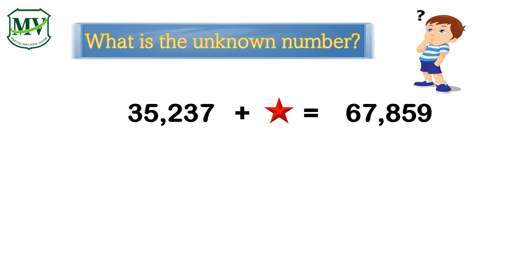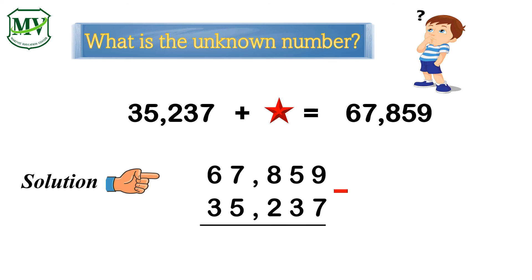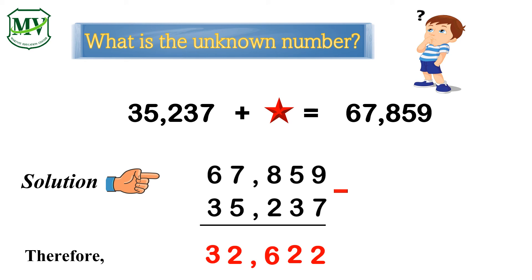What is the unknown number for this addition number sentence? If the second addend is the unknown number, we change the mathematical operation from addition into subtraction, then solve. 9 minus 7 equals 2. 5 minus 3 equals 2. 8 minus 2 equals 6. 7 minus 5 equals 2. 6 minus 3 equals 3. Therefore, the unknown number is 32,622.